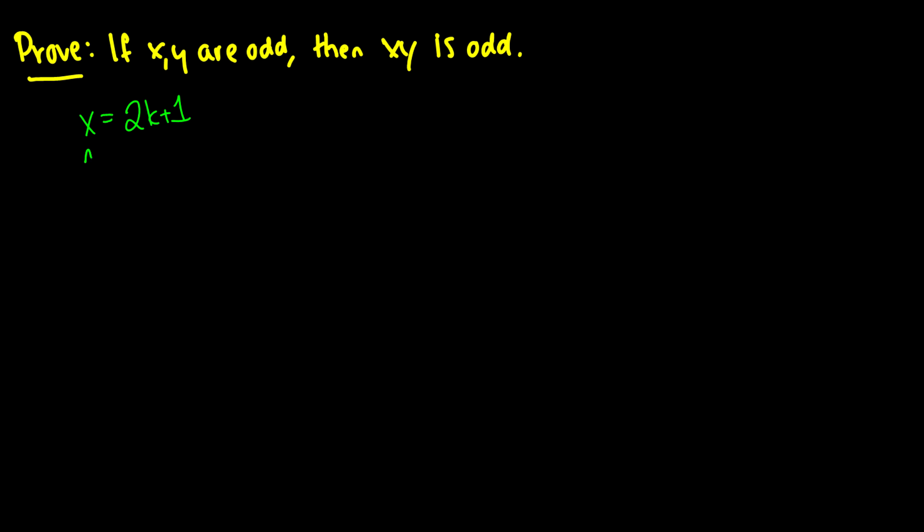So then x times y is going to be 2k plus 1 times 2j plus 1, which then when we factor this out, we're going to get 4kj plus 2k plus 2j plus 1.